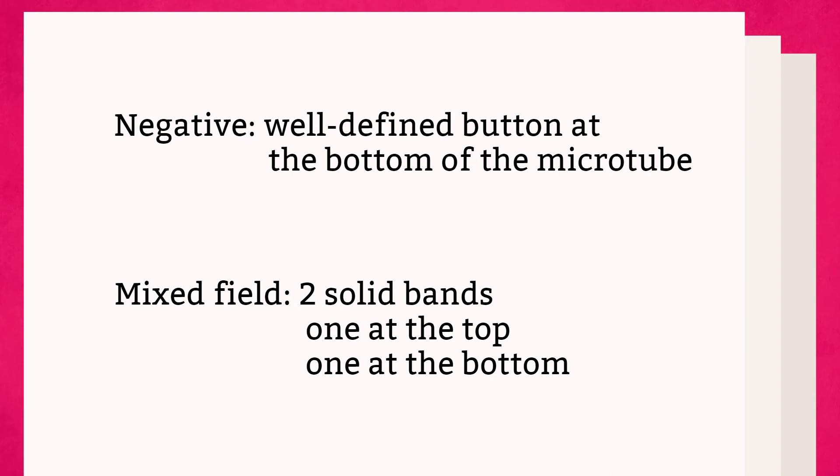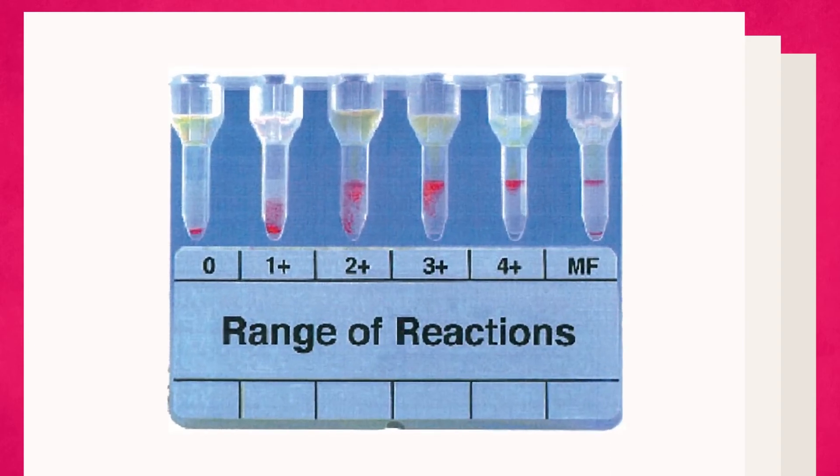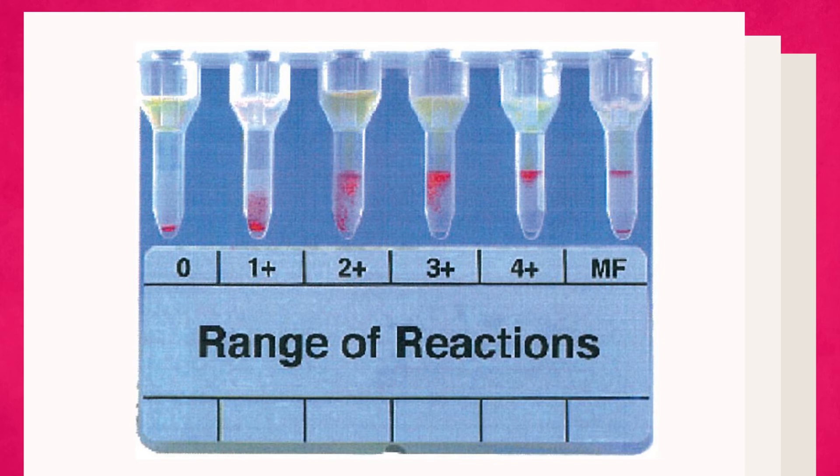Here's a recap on how to grade the cells. This is how I remember it: Negative — solid band on the bottom. 1+ — mostly on the bottom. 2+ — traveling from the bottom up. 3+ — traveling from the top down. 4+ — solid band up top. Mixed field — two bands: one up top, one on the bottom.